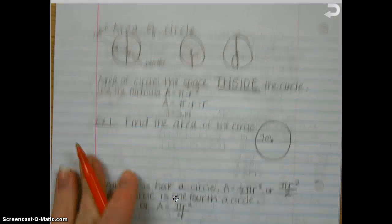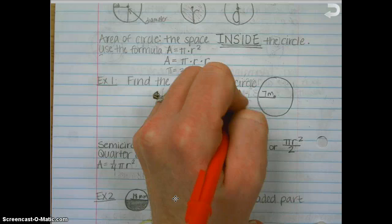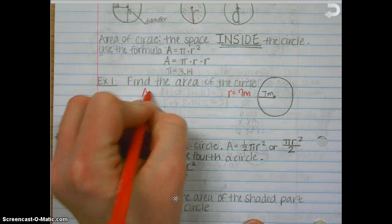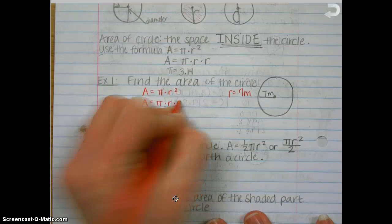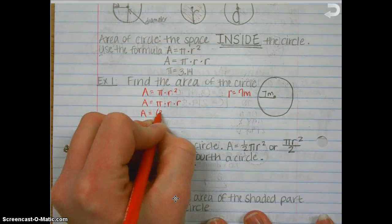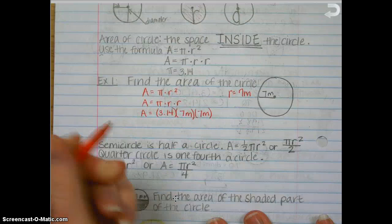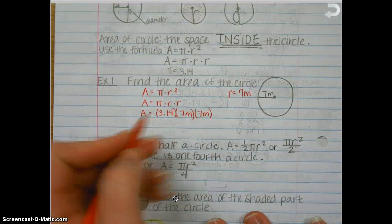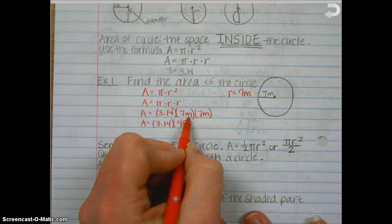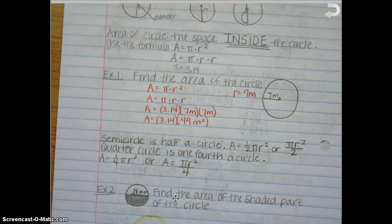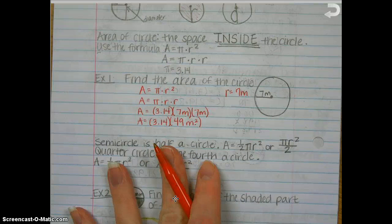So let's start with an example. We want to find the area of the circle, and it has a radius of 7 meters. We're going to use our formula: area is equal to pi times radius squared, or pi times radius times radius. Pi is 3.14, and our radius is 7 meters, and the other radius is also 7 meters. The easiest thing to do now is to multiply 7 times 7, and I would get 49. Meters times meters would be meters squared.